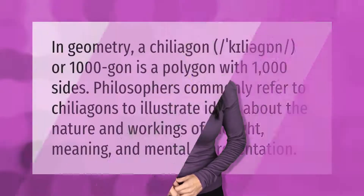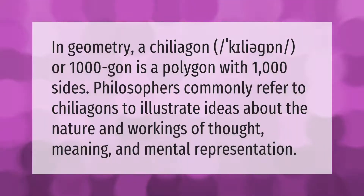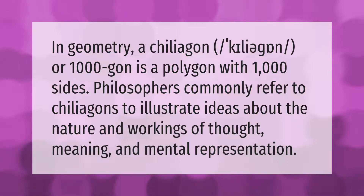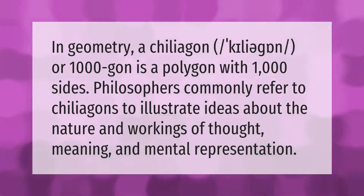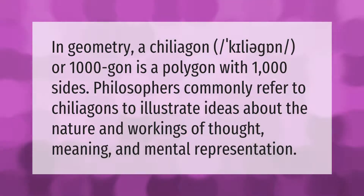In geometry, a chiliagon, or 1000-gon, is a polygon with 1000 sides. Philosophers commonly refer to chiliagons to illustrate ideas about the nature and workings of thought, meaning, and mental representation.